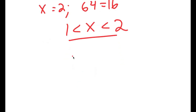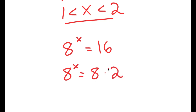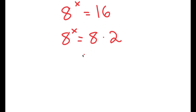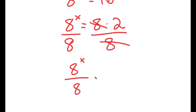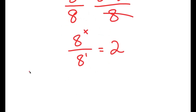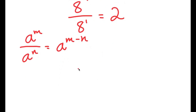How are we going to actually solve this and find the exact value of x? Well, I can rewrite 16 as 8 times 2. Then I'll divide both sides by 8, so those cancel out, and I get 8 to the power of x over 8 is equal to 2. Using the rule that a^m over a^n equals a^(m−n), I get 8 to the power of x over 8 to the power of 1, which equals 8 to the power of x minus 1, and that equals 2.